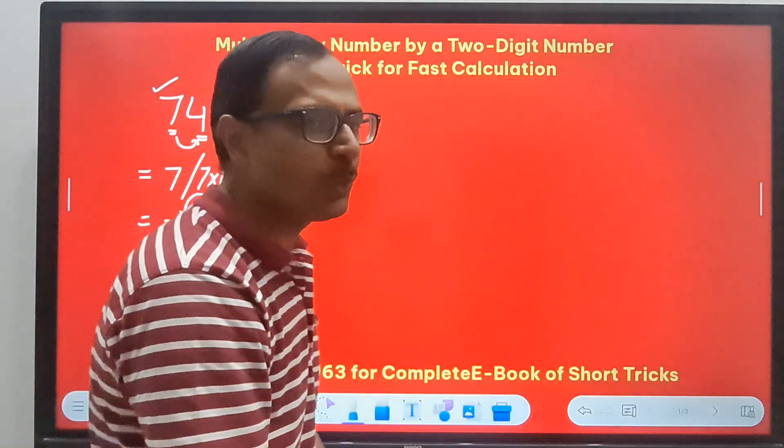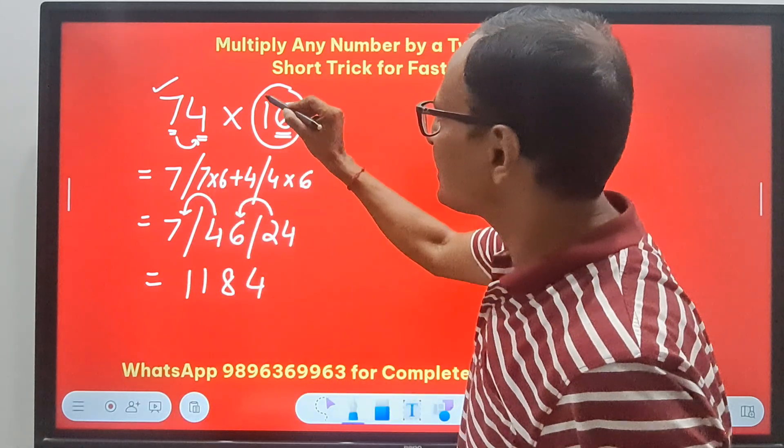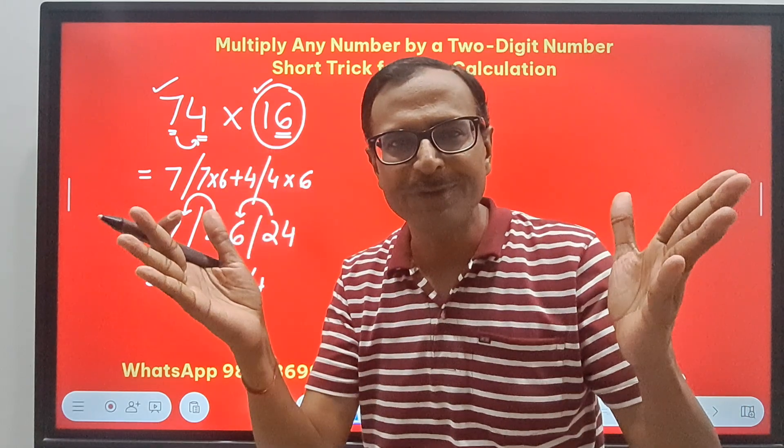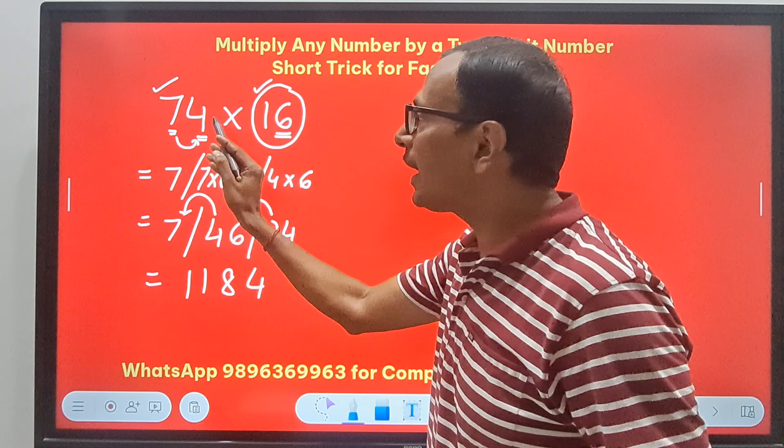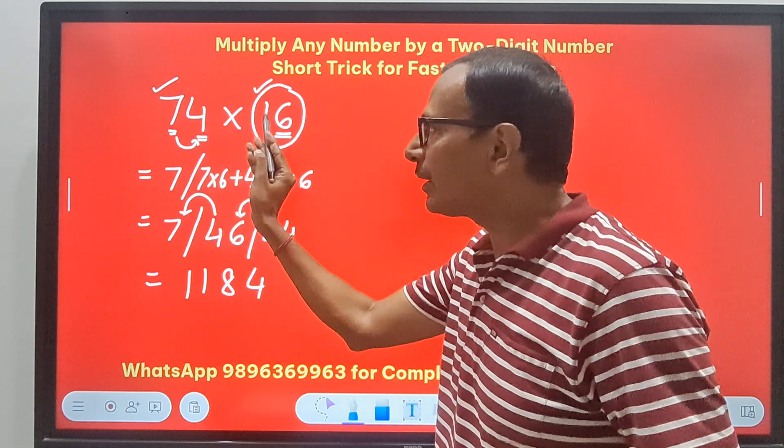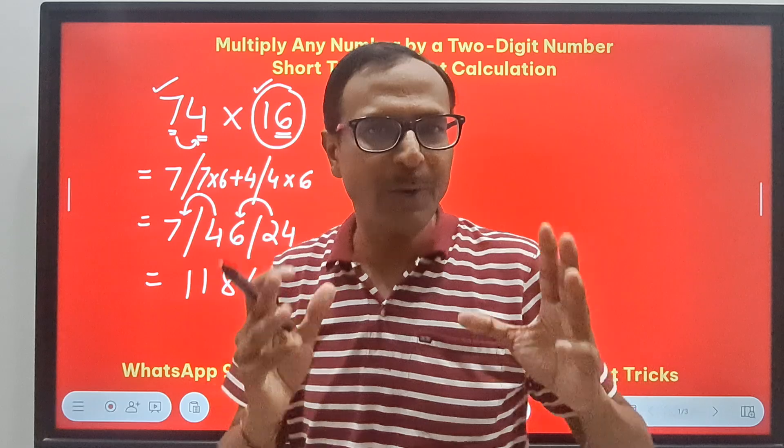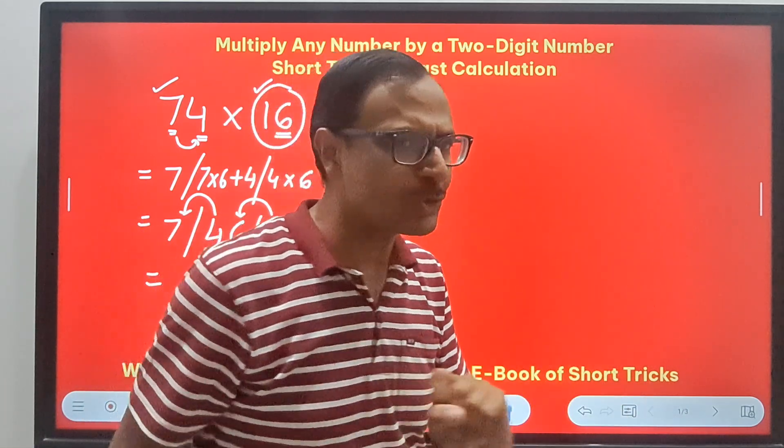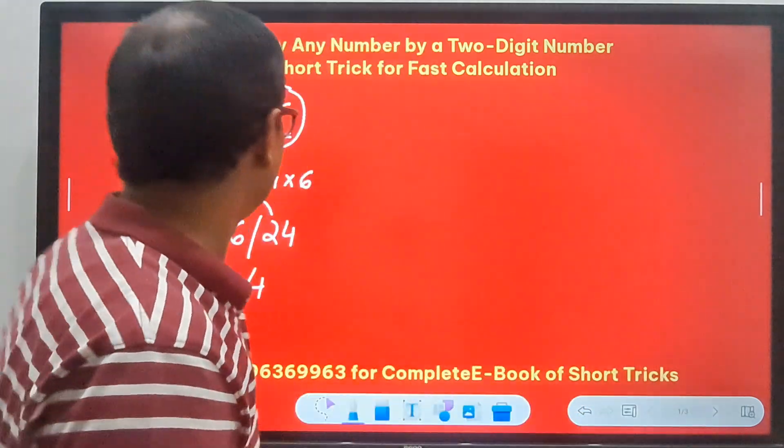What did I do here? Actually this is an extension of vertical and crosswise. Because there is a 1 here, I don't need to multiply by 1, right? That's pretty obvious, and that is why I am adding the next digit. Actually I am adding 4 × 1, but I told you, just add the next digit. That's how smartness works and makes things easier for us.